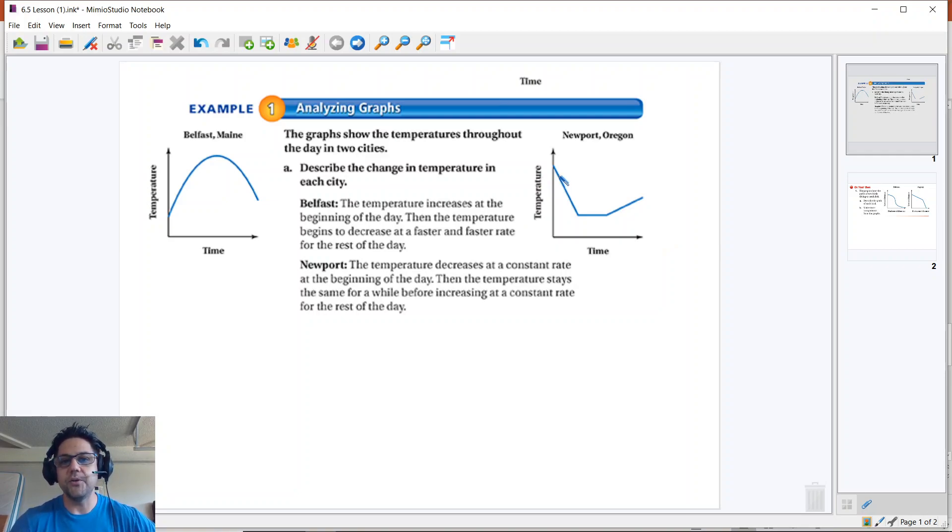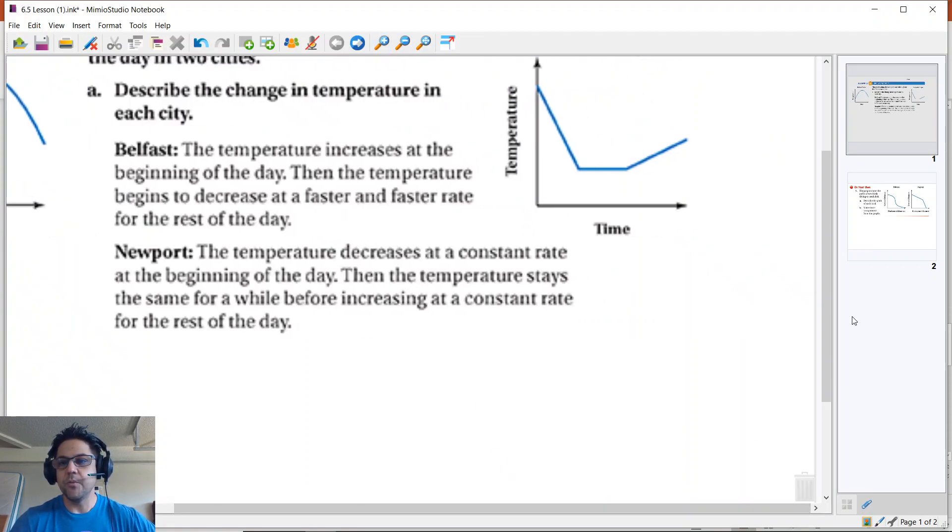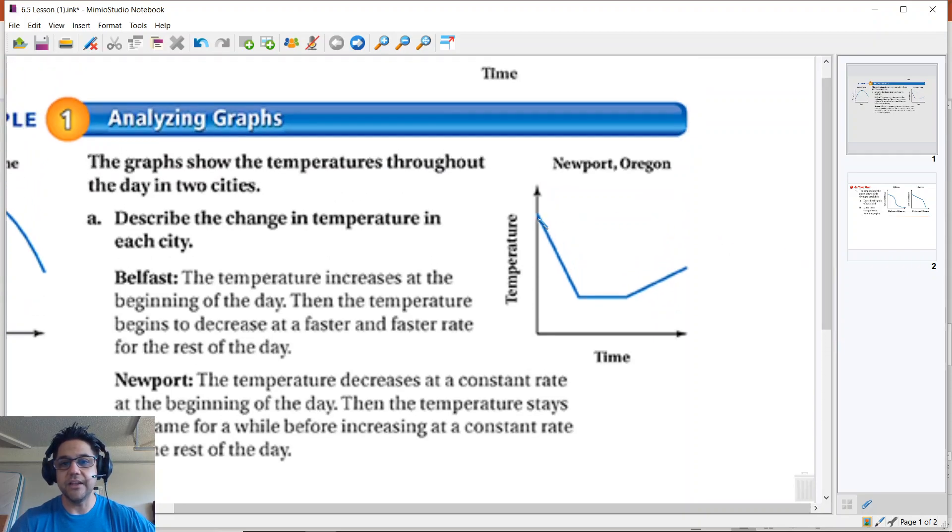it's just talking about the rate of change. So if you notice right here over on Newport, Oregon, we have a decrease, and that looks pretty steep. And remember, a steep change is definitely a greater change than a gradual change like here. So let's say that this may be part A, part B, and part C.